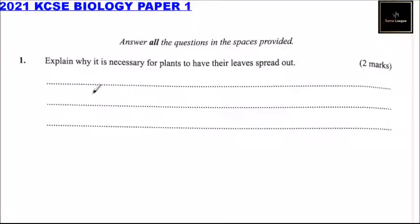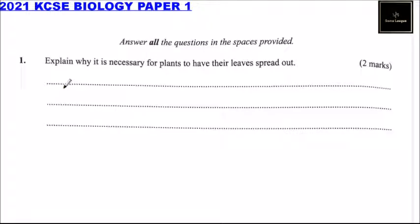This is the 2021 KCSE Biology Paper One. You are given the instructions: answer all the questions in the spaces provided. Question number one: explain why it is necessary for plants to have leaves spread out.